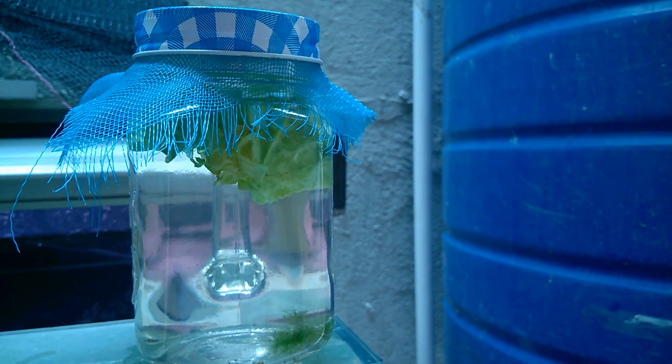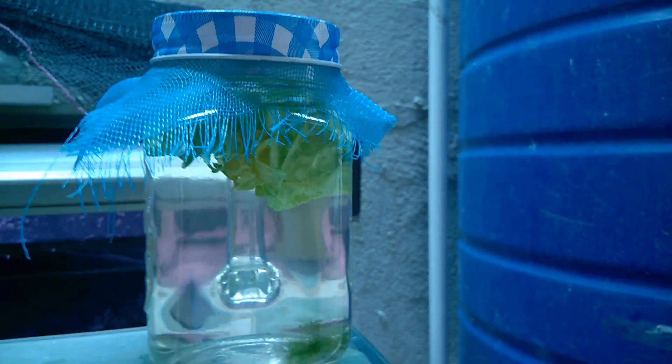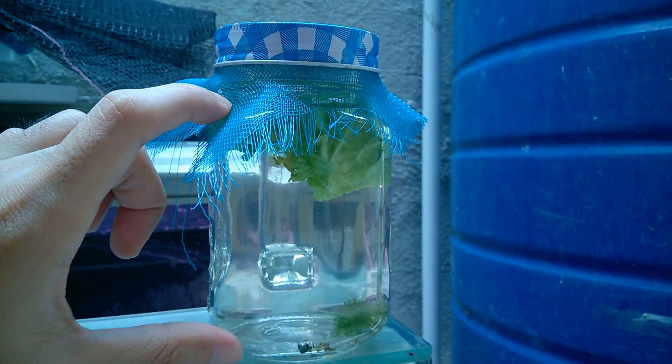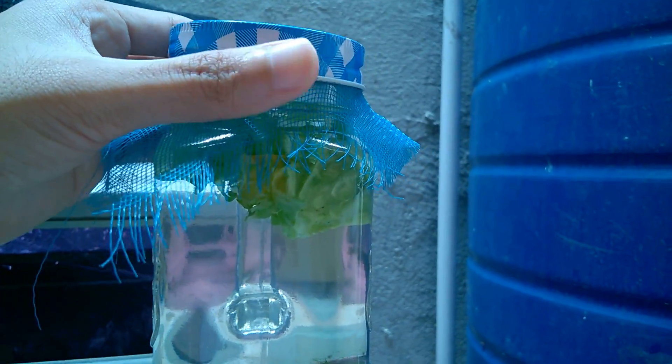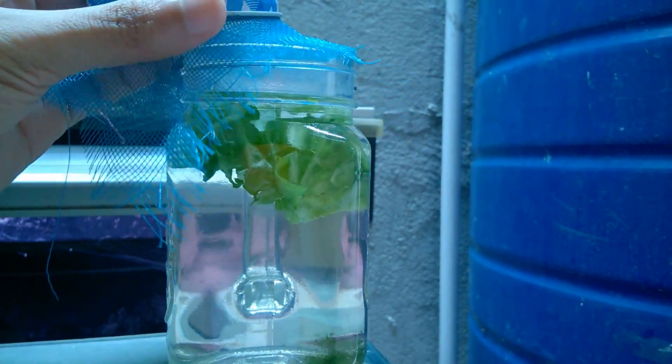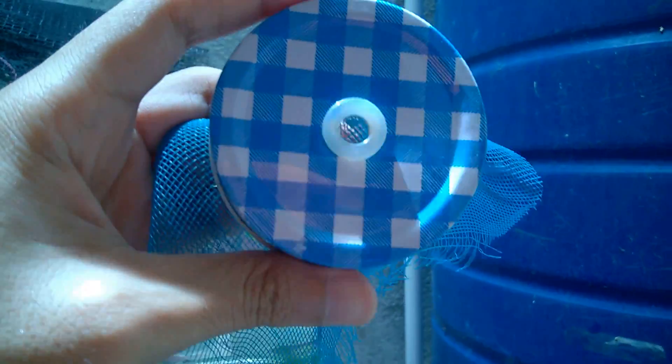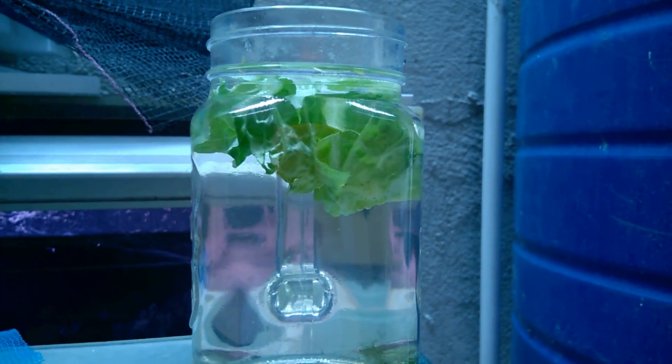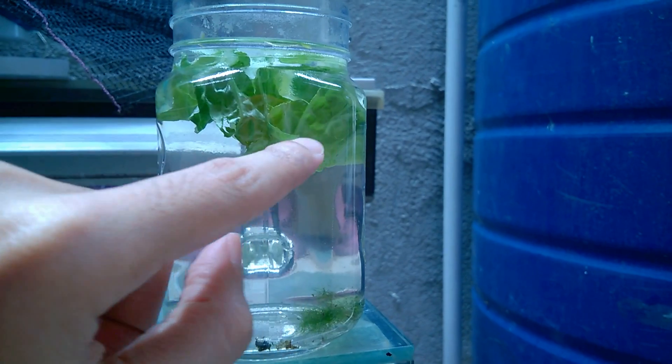This is how I set up my infusoria culture. I have a glass jar here. I cover it with netting because mine has a hole above to help aerate the water, and then I add a lettuce leaf.